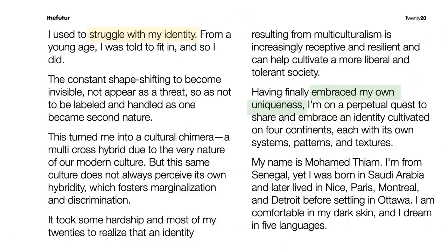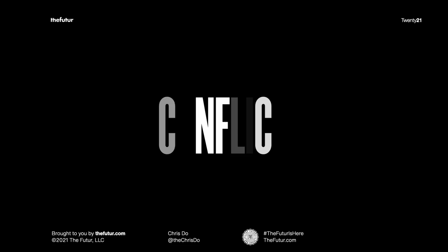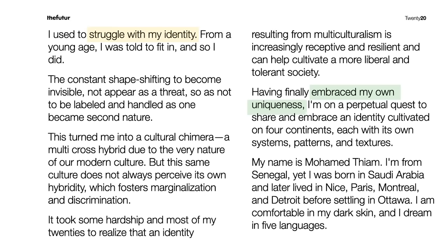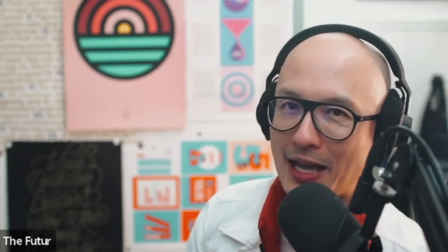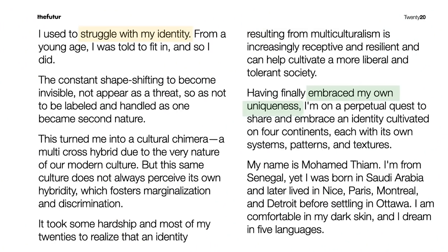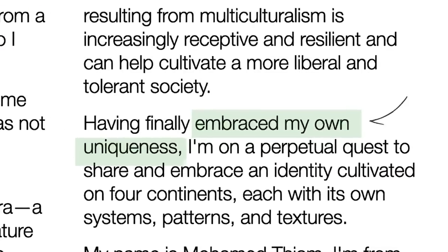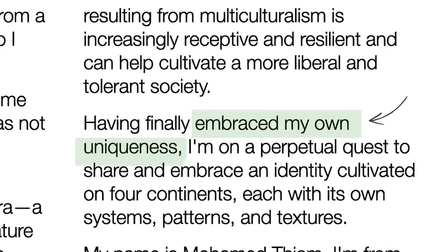I've reformatted the post because it was hard to put 400 characters on one page so we can see it clearly. What I've done is used two colors to identify two key things that are necessary for almost all stories. I highlighted the conflict in yellow — he is struggling with his identity — and the lesson learned is in green. This is the ordinary world to the new world where Mo learned to embrace his own uniqueness.